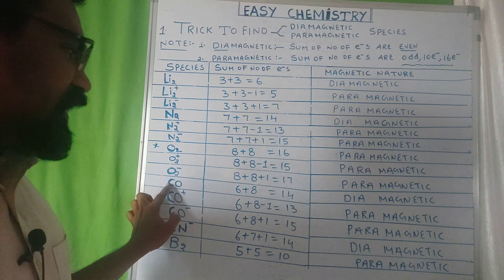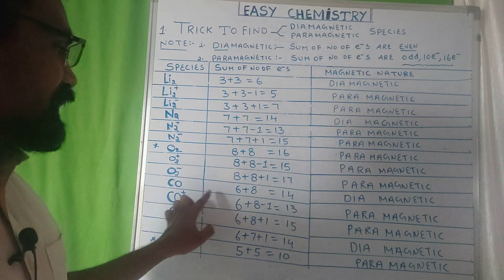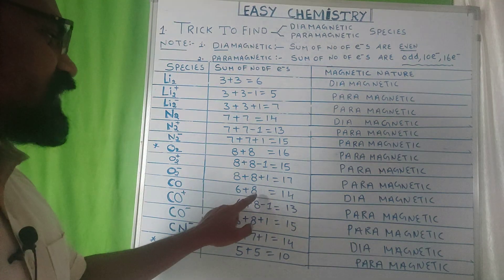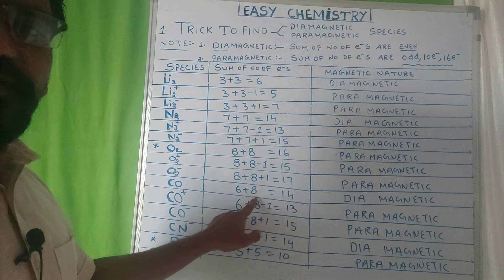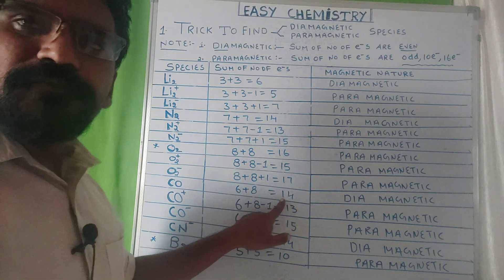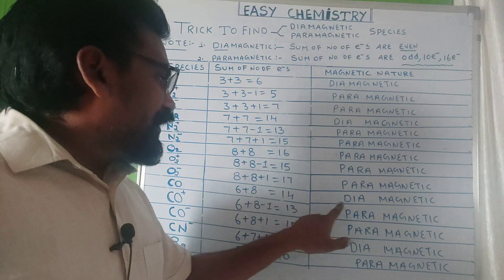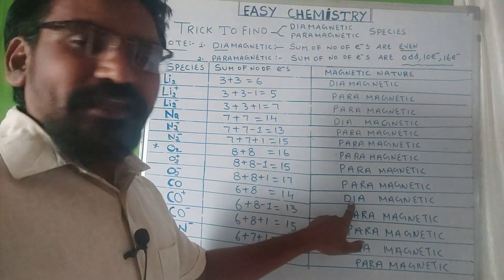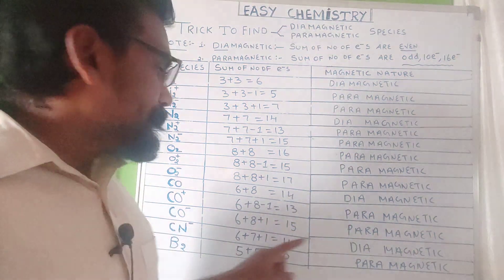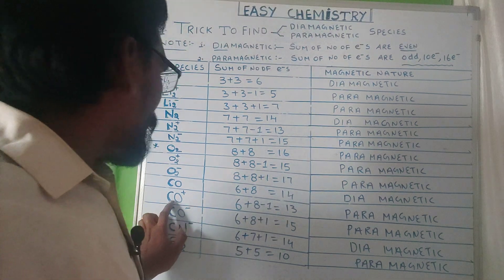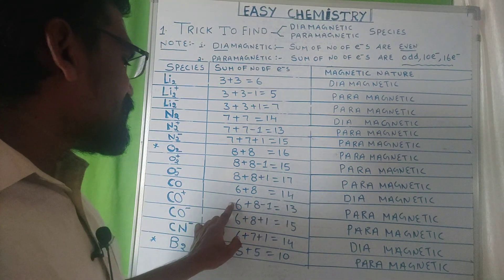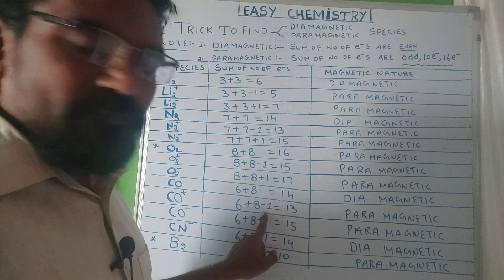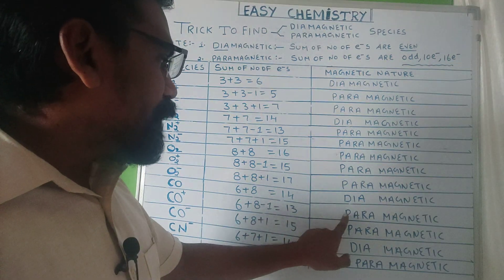CO: carbon atomic number 6 and oxygen atomic number 8, 6 plus 8 equals 14, so it is diamagnetic in nature. If you see CO plus, carbon 6, oxygen 8, minus 1 equals 13.